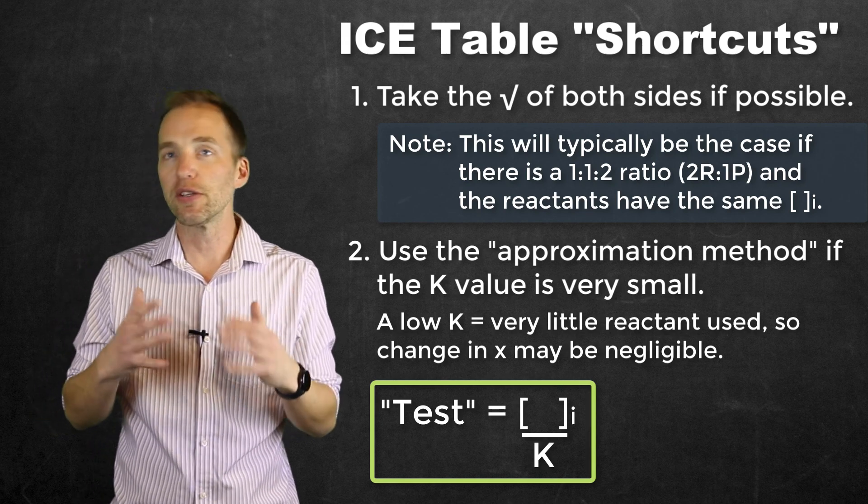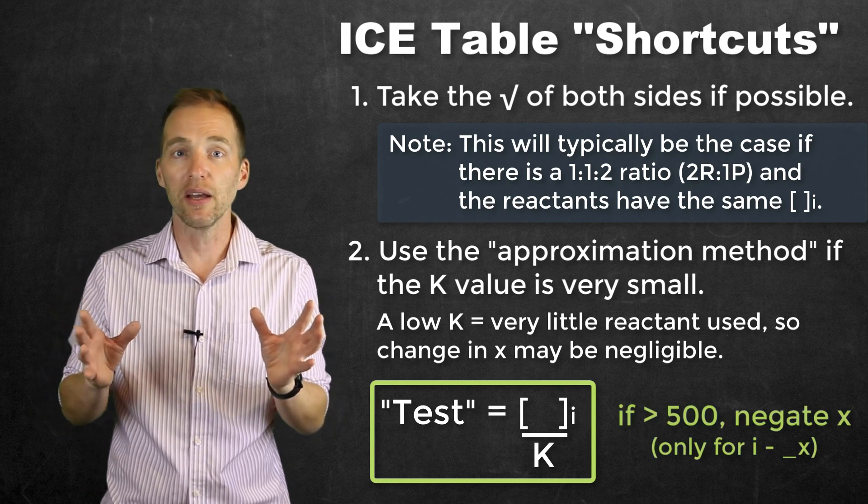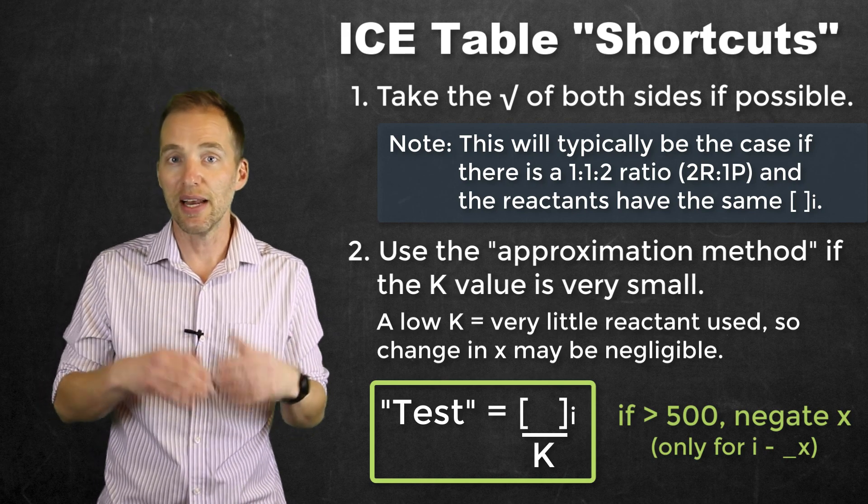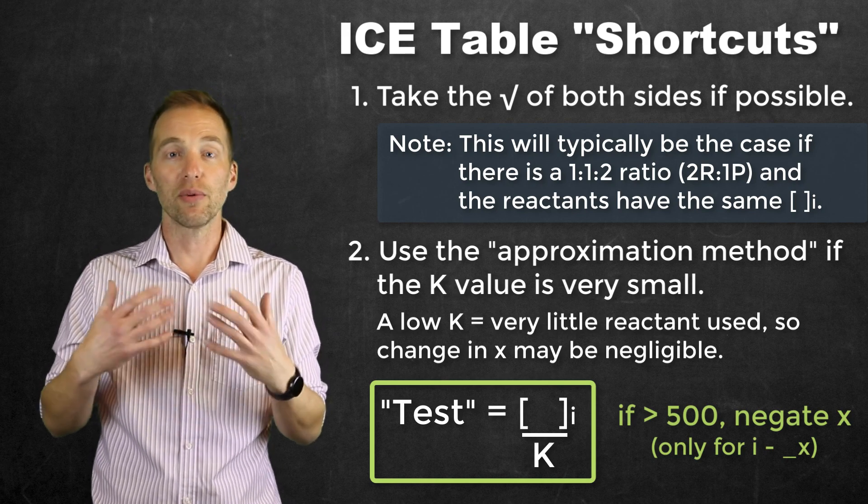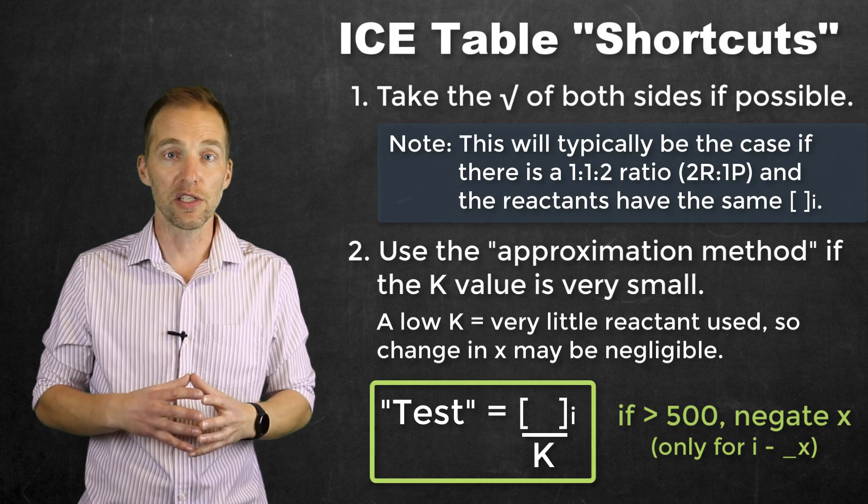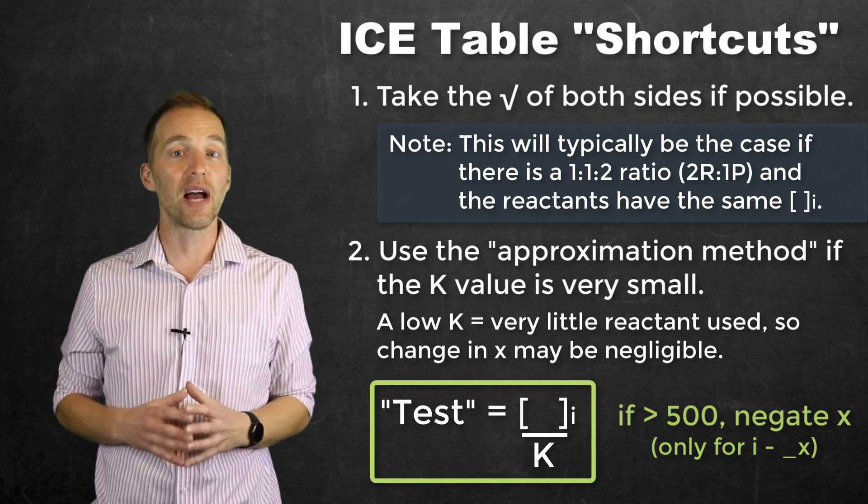And the way that we perform this test is that we take the initial concentration and we divide it by K. If that number is between 200 and 500, then it may be okay to eliminate an X that is changed from something or an initial concentration that's not zero. If that value is greater than 500, then you're probably safe in eliminating that X.